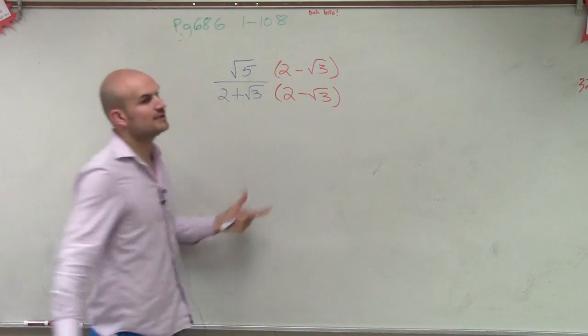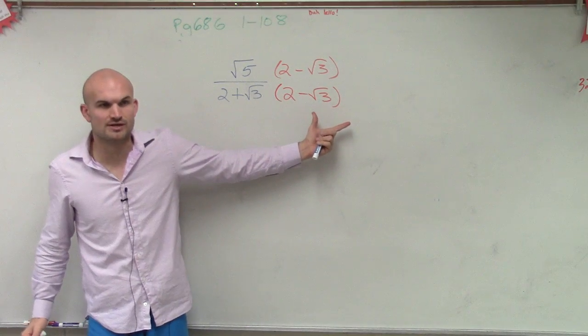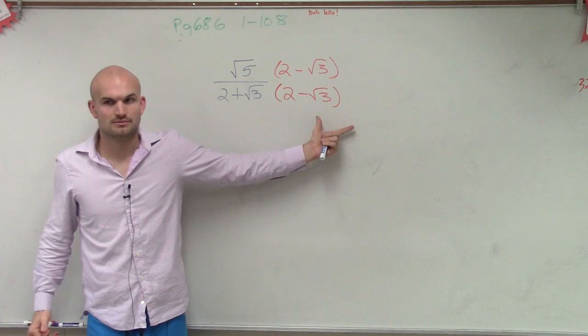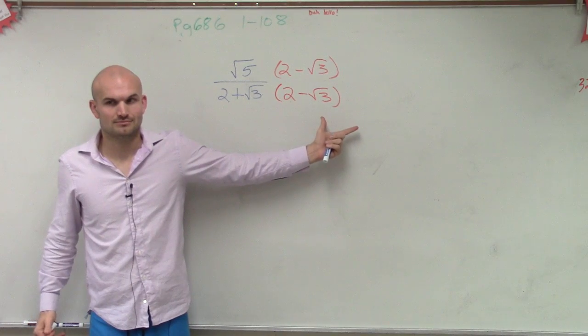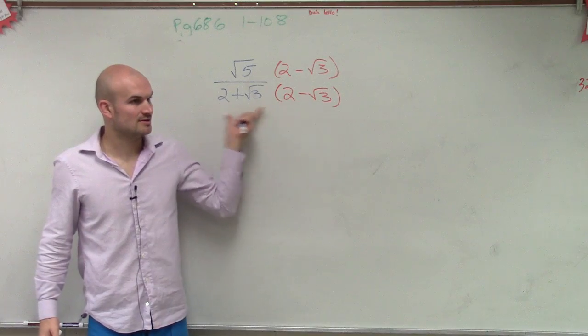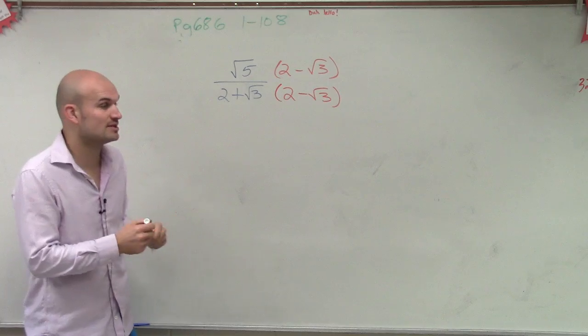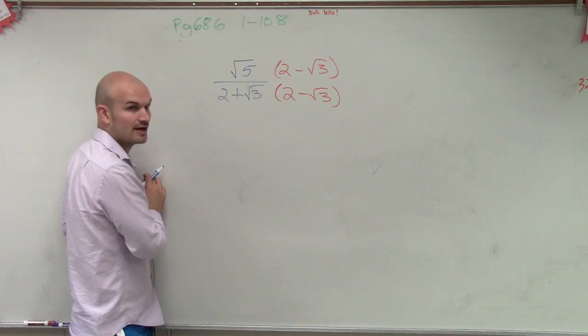Now, do you guys want me to multiply this out for you? Or can I apply the difference of two squares to easily multiply it? Do you guys know what this product is right here? It's a difference of two squares, which hopefully you guys should know is, remember, difference of two squares, your middle terms are going to cancel out, right?